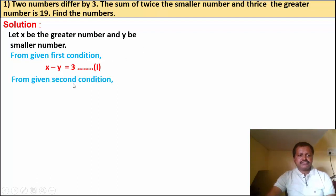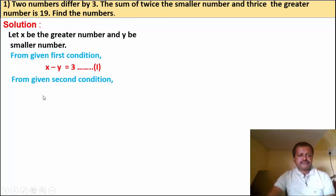From the second condition: the sum of twice the smaller number (2y) and thrice the greater number (3x) equals 19. So the equation is 3x plus 2y is equal to 19. That is equation number 2.